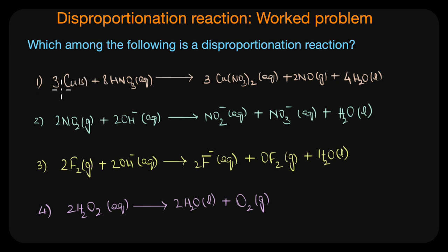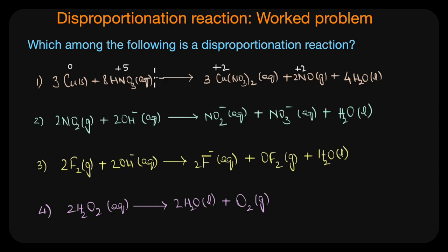The first reaction is the reaction of nitric acid with copper. Here, the oxidation state of copper changes from zero to plus two, and nitrogen in nitric acid goes from plus five to plus two in NO. Different elements are undergoing oxidation and reduction, but we cannot see one element undergoing both simultaneously. This is not a disproportionation reaction — nitric acid acts as an oxidizing agent, oxidizing copper to copper nitrate while itself getting reduced to NO.